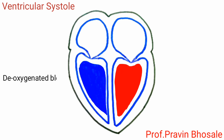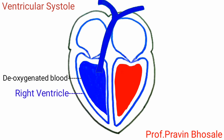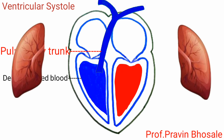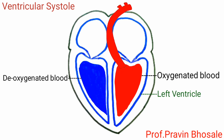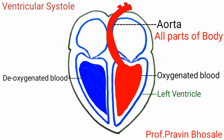During ventricular systole, the deoxygenated blood from the right ventricle enters the pulmonary trunk, which carries blood to the lungs for oxygenation. The oxygenated blood from the left ventricle enters the aorta, which carries blood to all parts of the body. Backflow of blood is prevented by semilunar valves. Ventricular systole lasts for 0.3 seconds.